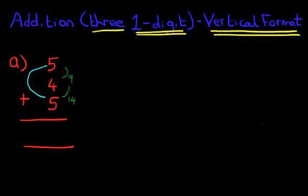5 plus 5 makes 10. And now, you only have to add the 4. 10 plus 4 is 14. Notice it's the same answer. But if you can recognize the number bonds, you'll be able to do it a little quicker.